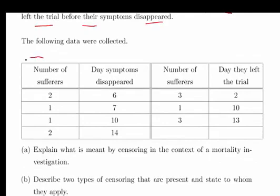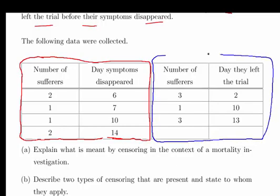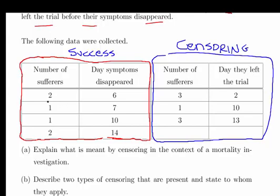We have the table broken down here. There is a bit of a hazard in this question - how data is presented. This is one set of people and this is another set of people. This is the people that the treatment was successful for, and this is essentially the censored data. Two sufferers had their symptoms disappear after 6 days, one sufferer after 7, one after 10 days and two after 14 days. Similarly, 3 left after day 2, one left after day 10 and three people left after day 13.